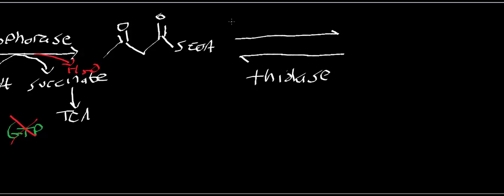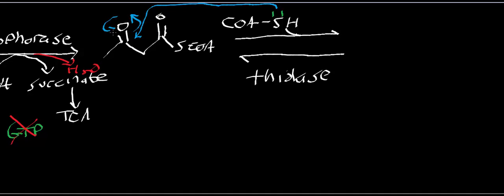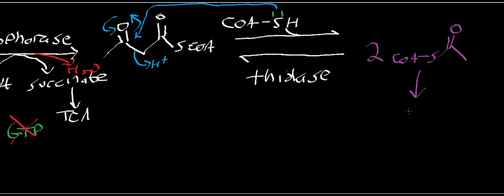A CoA comes in, and the thiolate pair does a nucleophilic attack — a nucleophilic acyl substitution — hitting the carbonyl carbon. The electrons kick up, they kick back down, and the bond comes out and abstracts a proton. What you end up with is two acetyl-CoA molecules. The acetyl-CoA's can go into the TCA cycle and be consumed by citrate synthase, powering the TCA cycle.